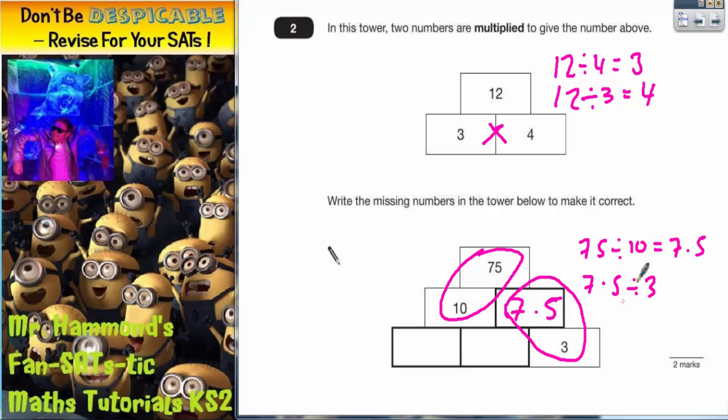If you split 7.5 into 3, you'll get 2.5 in each of the three sections. So this number here needs to be 2.5.